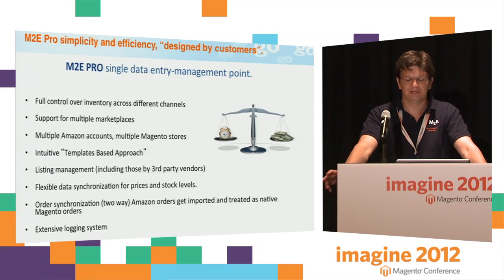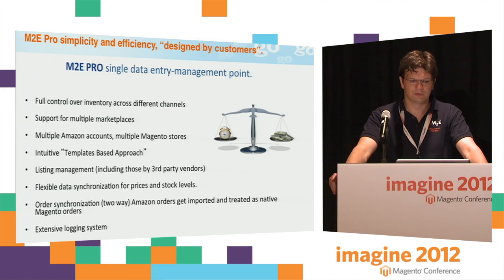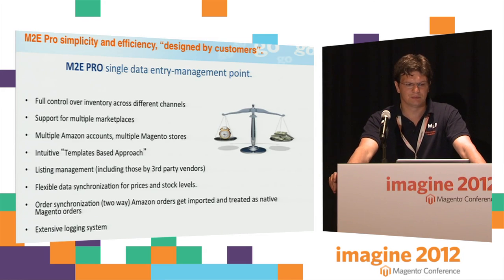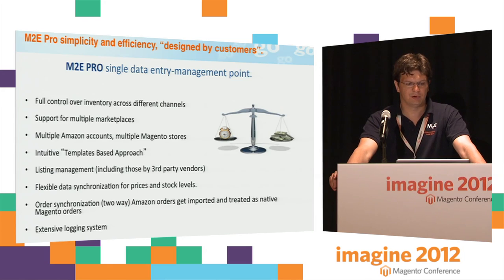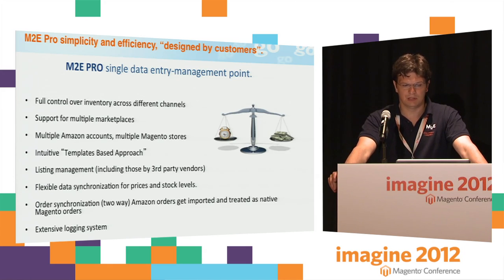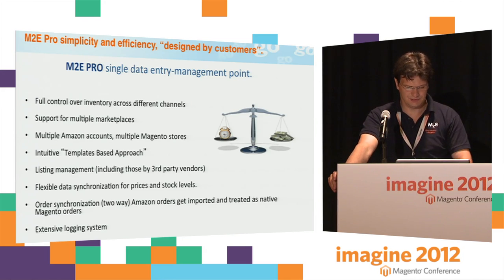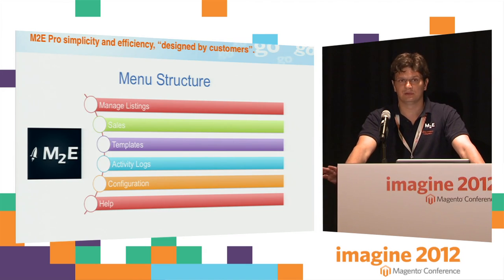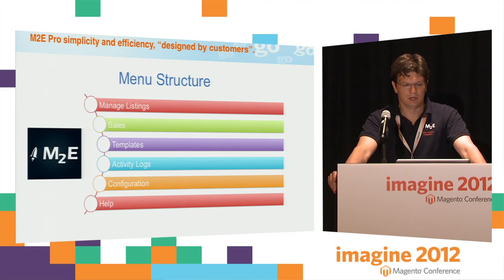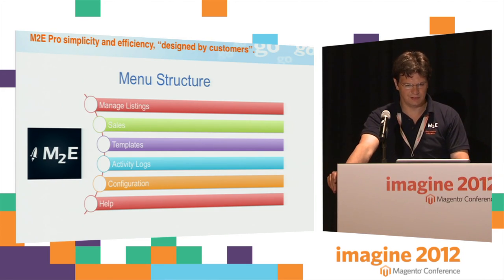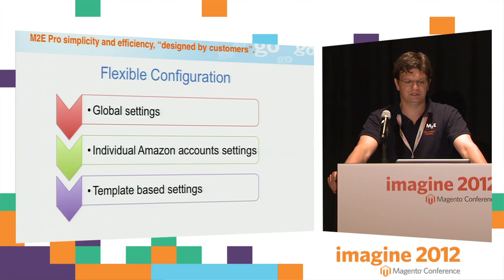M2E Pro Amazon integration is a data entry management tool. It allows you to have full control over inventory across different channels, supports multiple marketplaces, multiple Amazon accounts, and multiple Magento stores. It uses an intuitive template-based approach for listing management, including third-party vendors, with flexible data synchronization for prices and stock levels. For order synchronization, for every Amazon order, you get a Magento order created. We also provide an extensive logging system. The menu structure is very simple: Manage Listings, Sales, Templates, Activity Logs, and Configuration.